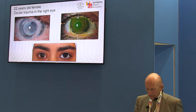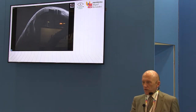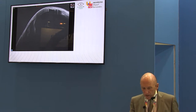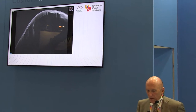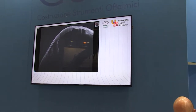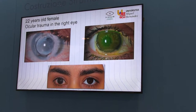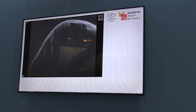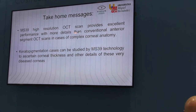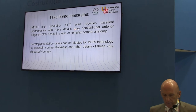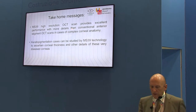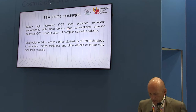What is the image of these unusual cases in OCT? Obviously you lose control of all the details, but with the OCT in the center you can still see the cornea and assess the anterior chamber. Obviously the opaque layer of pigment prevents any observation behind. So this is a limitation, but at least you can have some observation of corneal thickness and some details. The technical message here is that we have an OCT scan giving excellent performance with more details than conventional anterior segment OCT in complex cases. Keratopigmentation can be studied by MS-39 for certain corneal thickness details in this very diseased cornea.